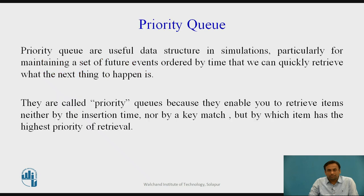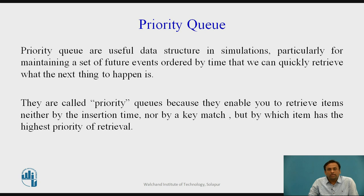Let us start with the priority queue. Priority means giving some things precedence over others. Priority queues are useful in simulations, particularly for maintaining sets of future events ordered by time, so we can quickly retrieve what is next to happen. They are called priority queues because they enable retrieving items not by insertion time or key match, but by which item has the highest priority of retrieval.